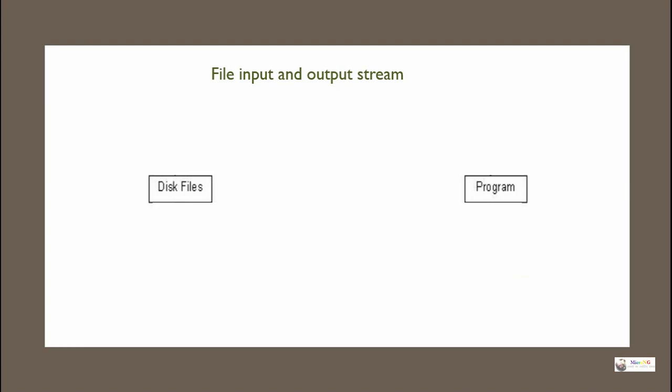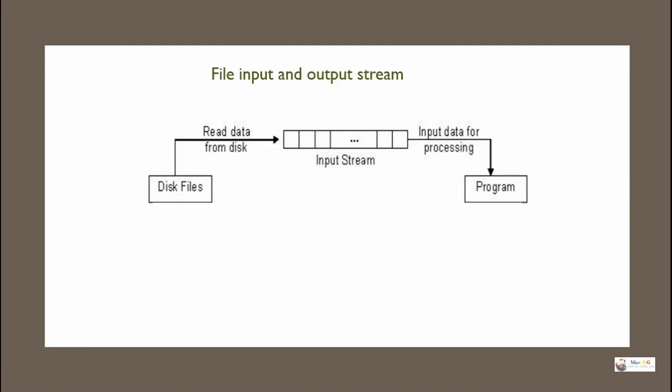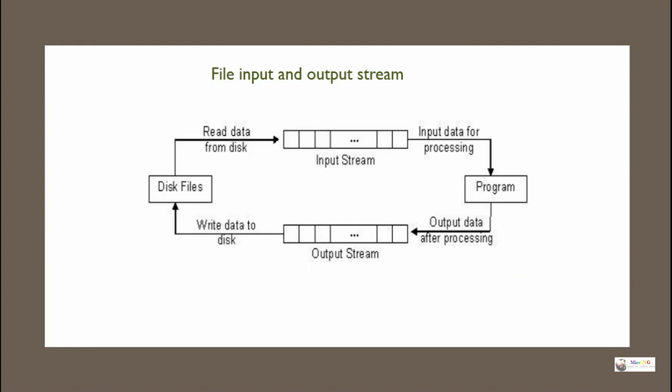There is a program and a disk file. The inputStream reads data from the disk file and gives that data to the program for processing. The outputStream takes the processed data from the program and writes it back to the disk file. So outputStream writes data to the file and inputStream reads data from the file.